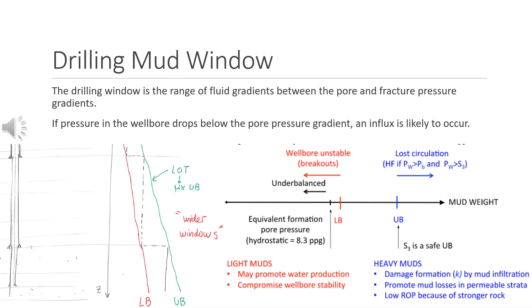Drilling mud window. The drilling window is the range of fluid gradients between the pore and fracture pressure gradients. If pressure in the wellbore drops below the pore pressure gradient, an influx is likely to occur.